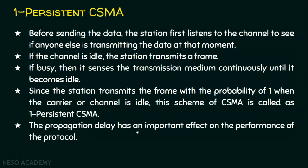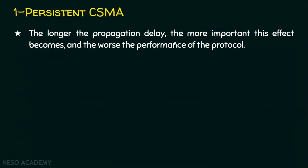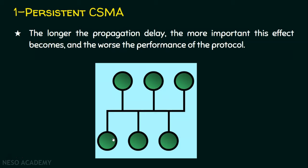The propagation delay has an important effect on the performance of this protocol. The longer the propagation delay, the more important this effect becomes, and the worse the performance of the protocol. If the sender places a frame and it is on the way, and another node senses the channel as free and transmits, the two frames collide. When propagation delay is very high, the performance of one-persistent CSMA is very bad.